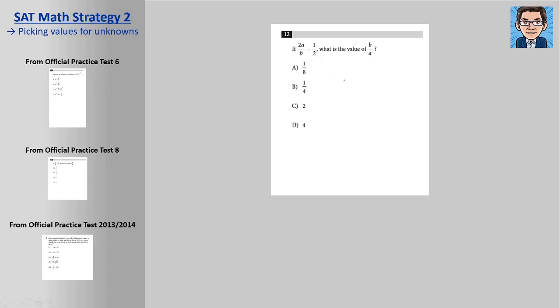So I'm going to pick numbers. Let's see, 2a over b has to equal 1 over 2. So if I pick 8 for b, to make this a half, 2a has to be 4, so then a is going to be 2. So I let a be decided by what I picked for b.